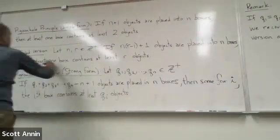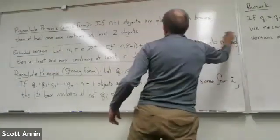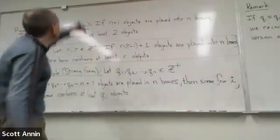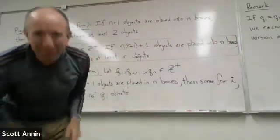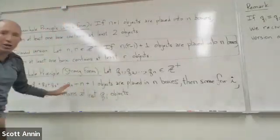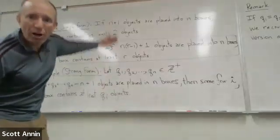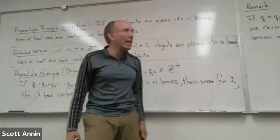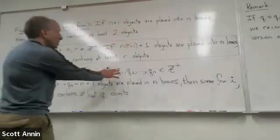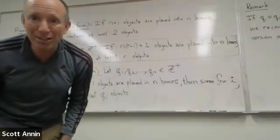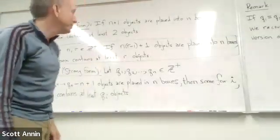And in fact, if r is equal to 2, specifically, we recover the original simple form of the original principle. So, this strong form actually does include all of the earlier versions that we've looked at. This one, however, allows these q's to take on various different values that could all be different from each other.